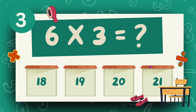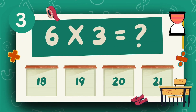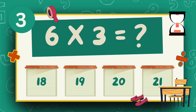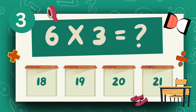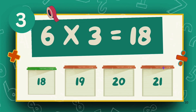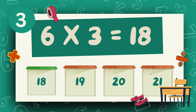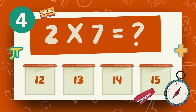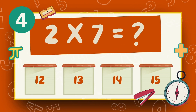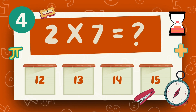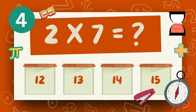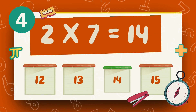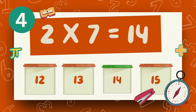What is 6 multiply 3? The answer is 18. What is 2 multiply 7? The answer is 14.